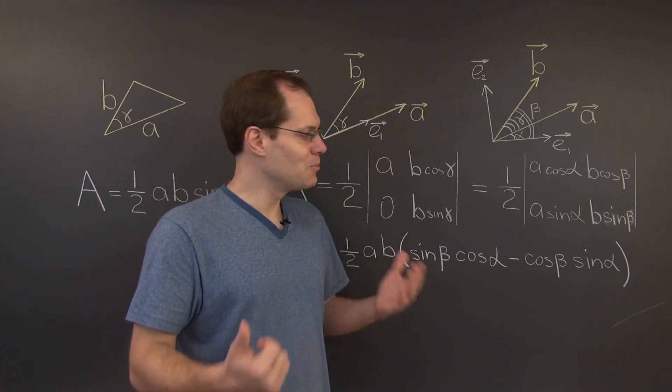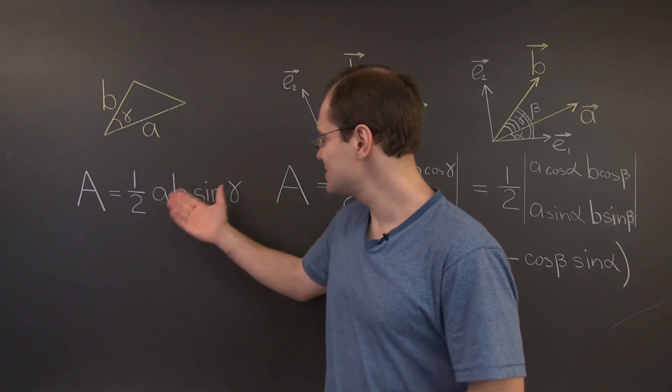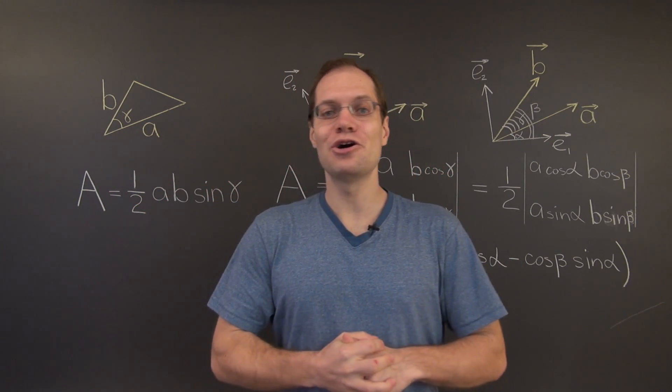And sine of beta minus alpha, and of course beta minus alpha is precisely the angle gamma. Okay, and this was the second more generic but also more general and interesting derivation of this very well-known formula for the area of a triangle. So, go determinants!